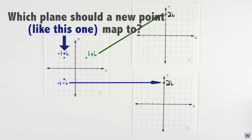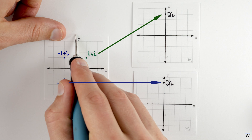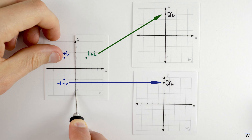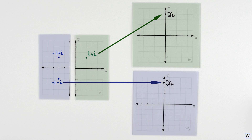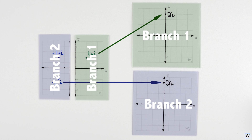A simple and effective approach here is to simply divide the z-plane into two halves. We'll let the right half map to our first w-plane, and the left half map to our second w-plane. These restricted versions of our multi-function are called branches.